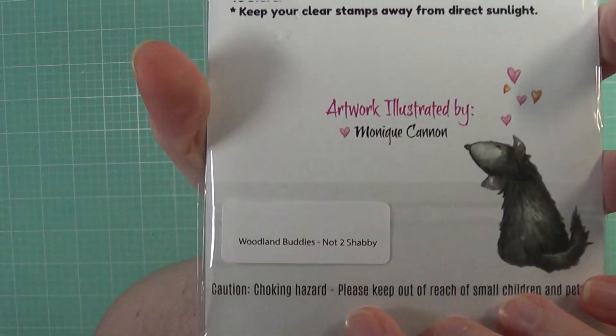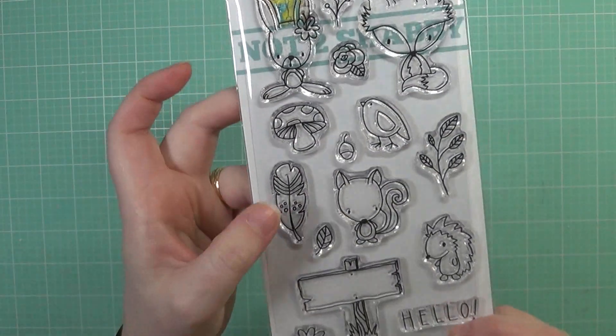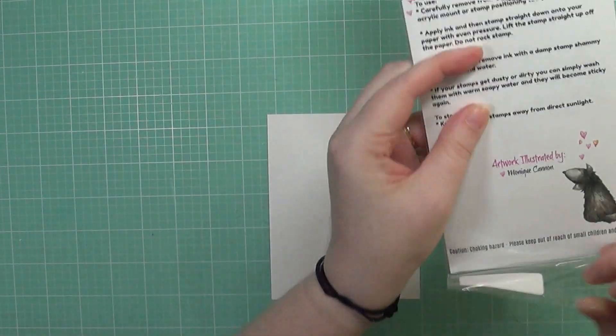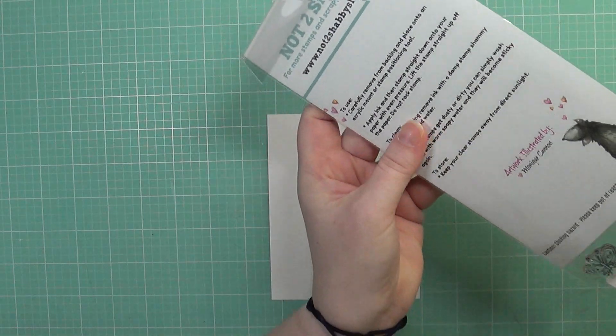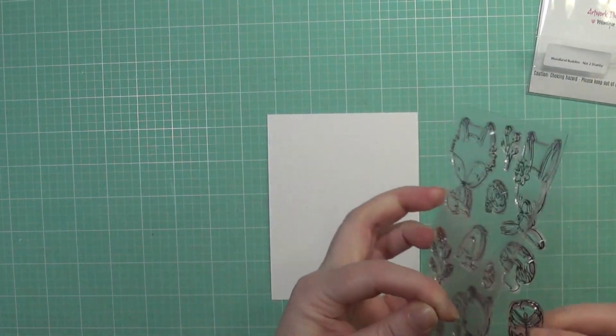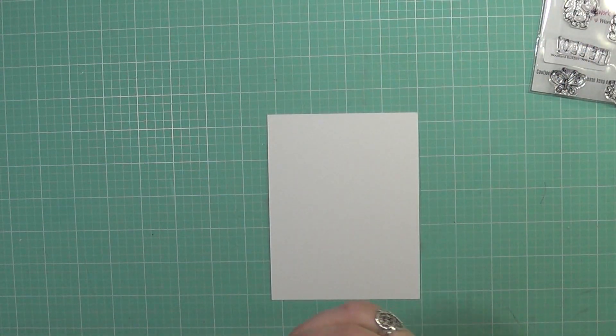Today I'm going to be making a card using this Woodland Buddy stamp set from the Not Too Shabby shop, and I thought I would make a masculine card today. I love this little feather in this set, and I thought it would be perfect to do my go-to and favorite technique of card making, which is emboss resist.